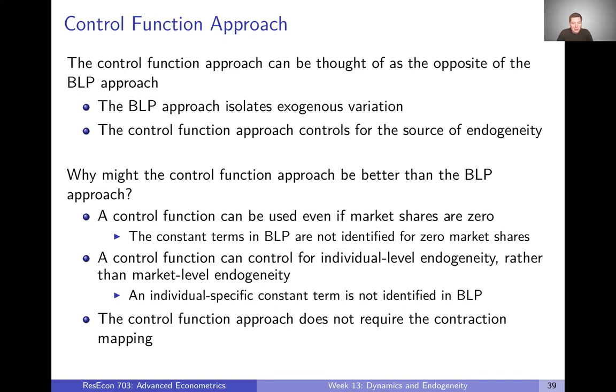Why might this approach be better than BLP? We just spent a lot of time covering BLP. A control function can be used even if market shares are zero. Trying to estimate those delta terms in BLP is not going to work. They're just not identified if any market shares equal zero.